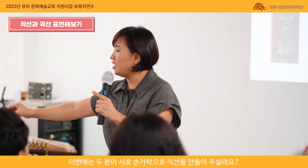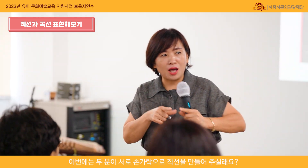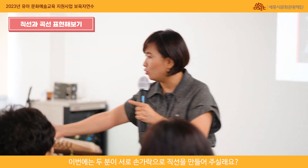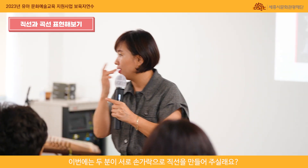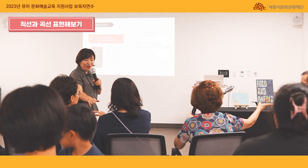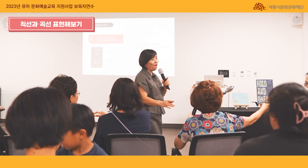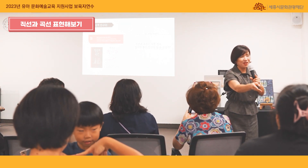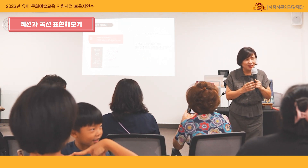그러면 이번에는 두 분이 서로 손가락으로 한번 직선 한번 만들어주실래요? 두 분, 두 분씩. 시옷이 됐어. 오, 여기는 마르모가 됐어요.